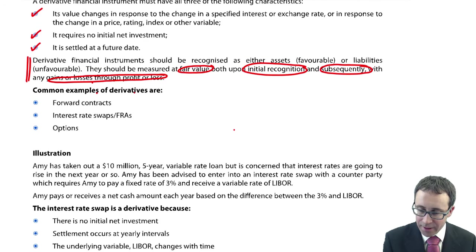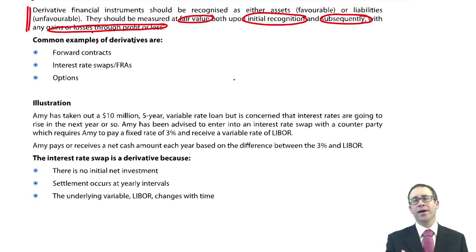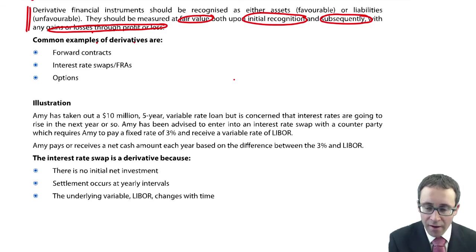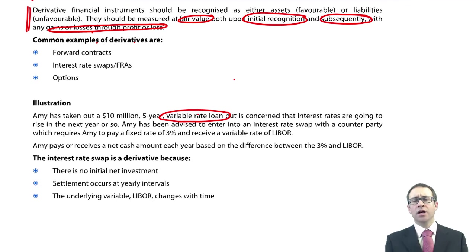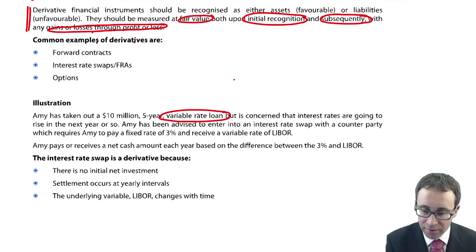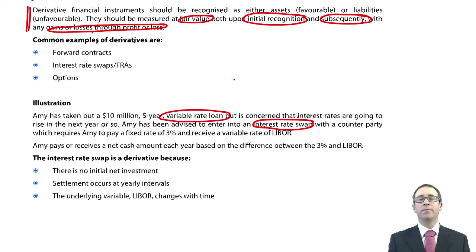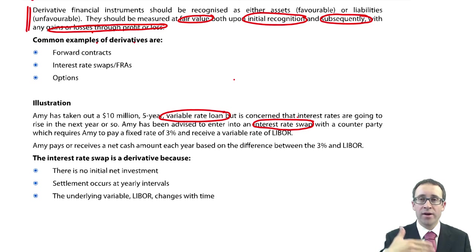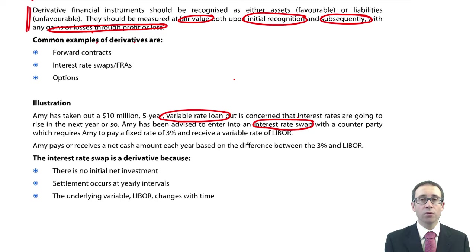The illustration is based around a swap agreement. Amy has taken out a $10 million five-year variable rate loan. If interest rates go up, she's going to be paying more money. The risk is that interest rates rise and she pays more interest into the future. She has been advised to enter into an interest rate swap. You find a counterparty — somebody else who has the opposite concern. We're fearful of rate rises; maybe they're fearful of a rate fall. There are trillions of dollars of these interest rate swaps in existence, so you can find somebody who has borrowed the same amount for the same period. We agree to swap the interest payments — we still have our own borrowings, but we swap the payments, so I pay theirs and they pay mine.